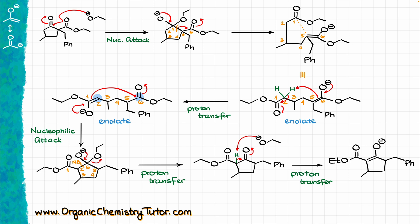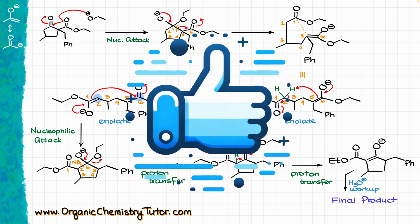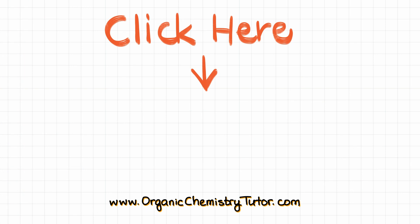The last step is to neutralize the molecule and protonate it using acidic workup, making our final product. The final product looks just like the intermediate in the middle of our mechanism. Did you figure it out or were you completely lost? Let me know in the comments below, and as always, thanks for watching. If you learned something new today, hit that like button and I'll see you next time.